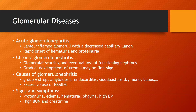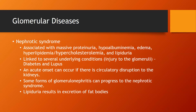Signs and symptoms include proteinuria (protein in the urine), edema with swelling in the face and throughout the body, hematuria (blood in the urine), oliguria (small amount of urine being produced), high blood pressure, and elevated BUN and creatinine.